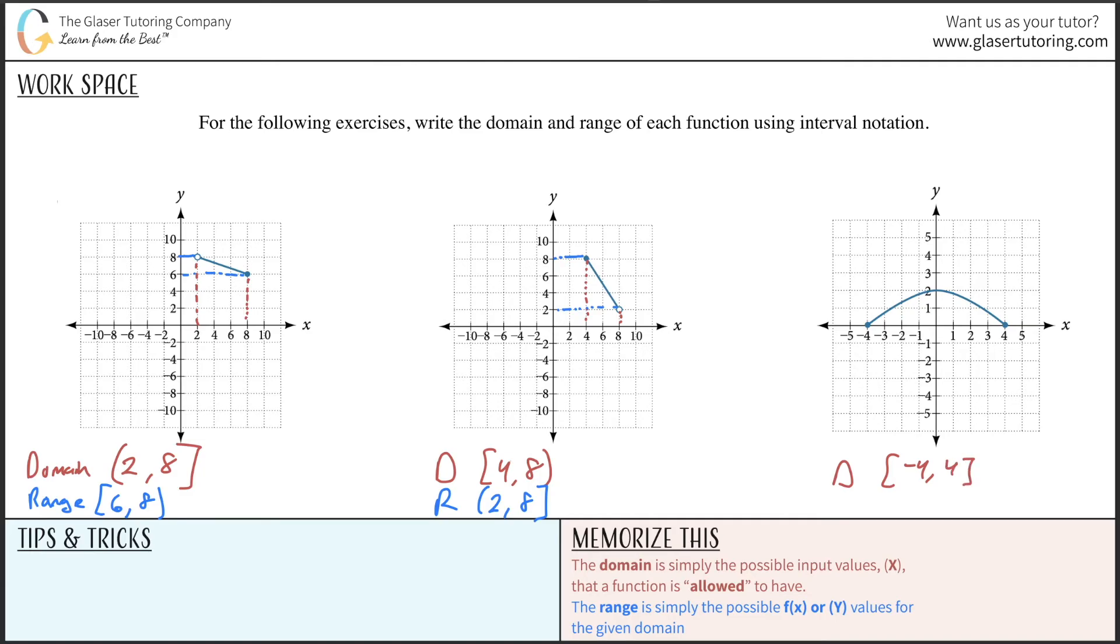And for the range here, notice it's basically from y equals 0 all the way to y equals 2, and it looks like it includes those points. So inclusive of 0 all the way to 2: [0, 2].